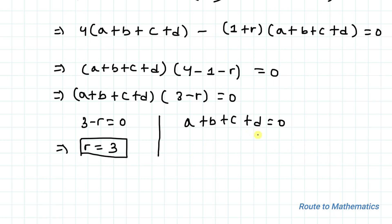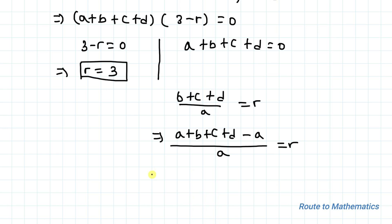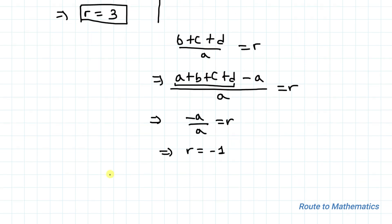If a+b+c+d = 0, let's substitute this into the first ratio: (b+c+d)/a = r. Adding and subtracting a in the numerator, we have (a+b+c+d) minus a, all divided by a, equals r. Since a+b+c+d = 0, this gives minus a divided by a = r, so r = minus 1.